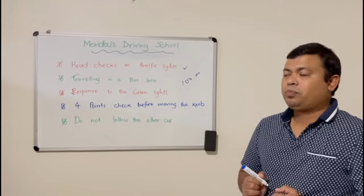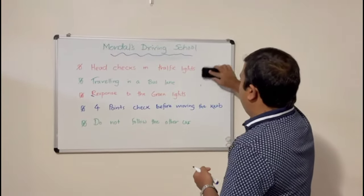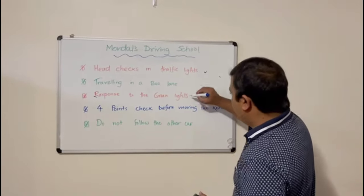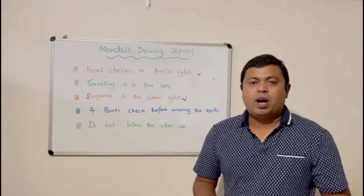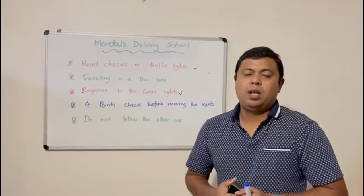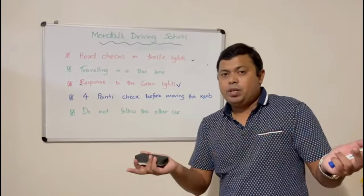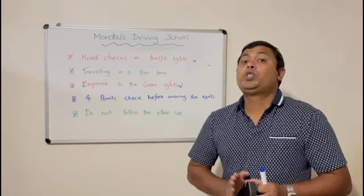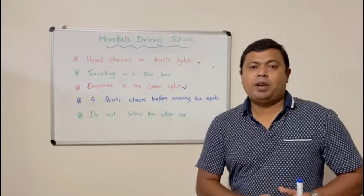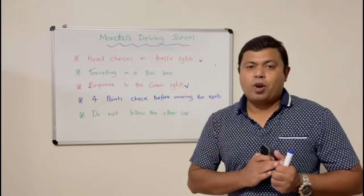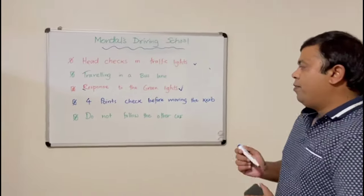Number three is responding to green lights. If you are stopped at a red light as the front car and the light turns green, you are not going to go straight away — you have to check left and right first, then you can go. Do not forget this; you might get failed for this reason.